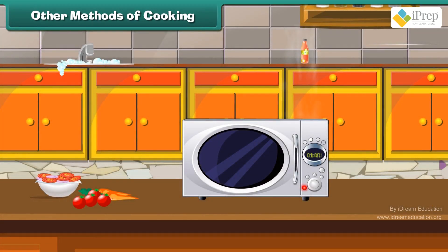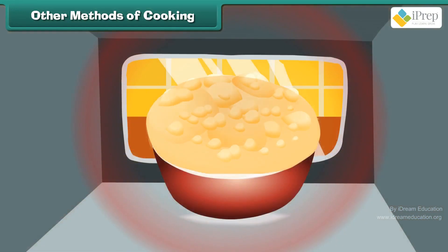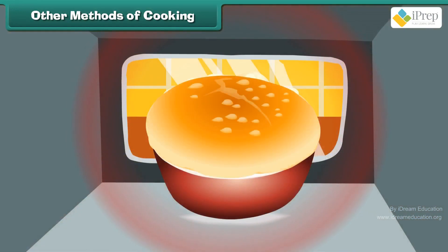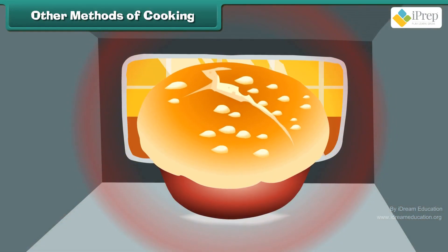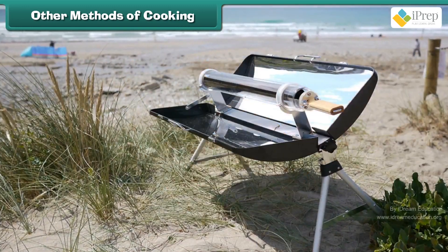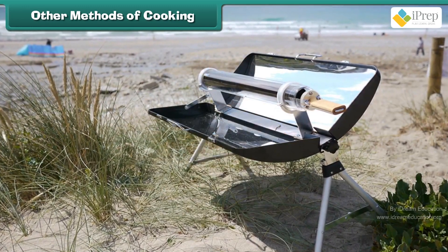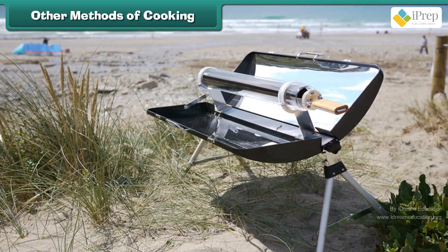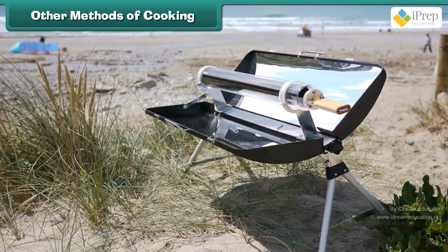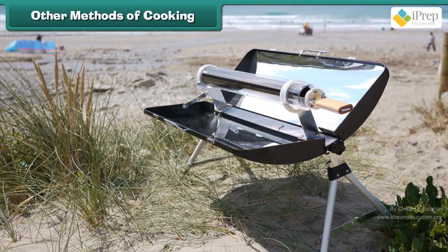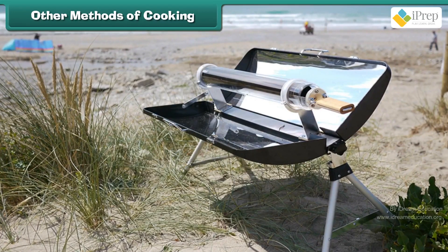Other methods of cooking: Microwave cooking is a comparatively new method of cooking in which food is cooked by microwave radiation. In solar cooking, a solar cooker makes use of sunlight as its source of energy.